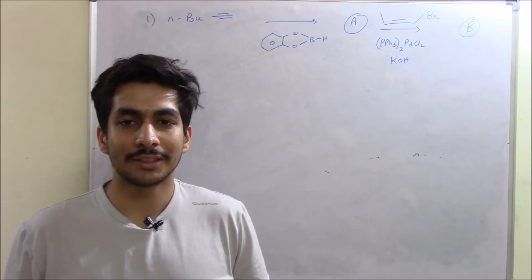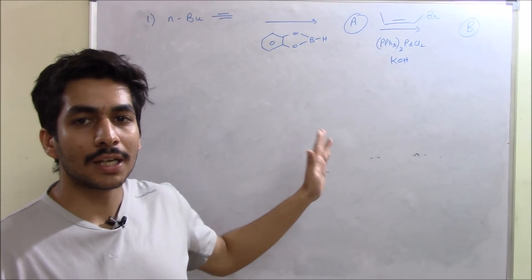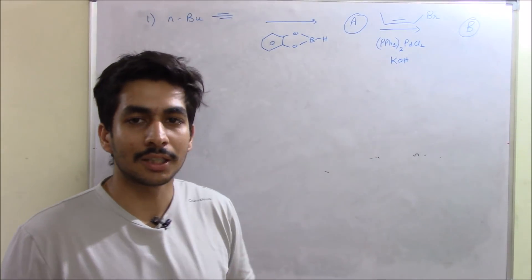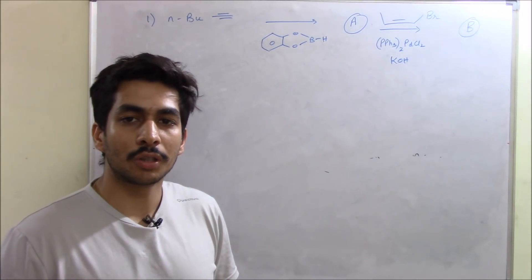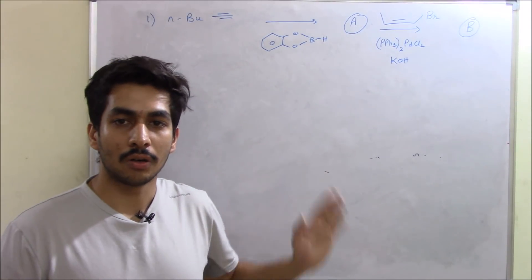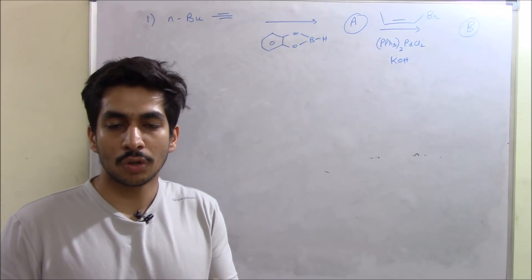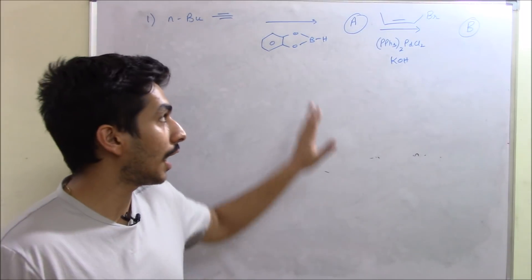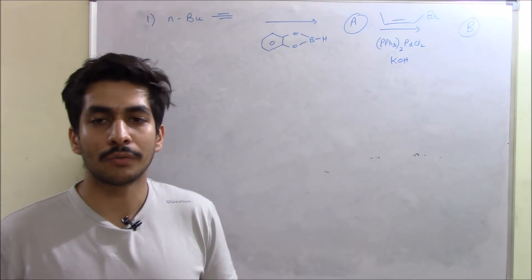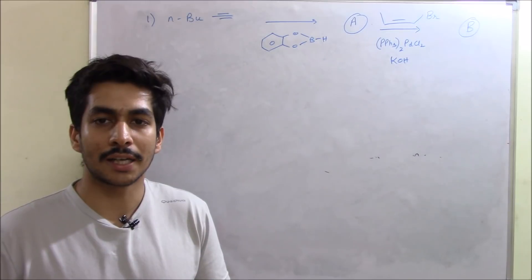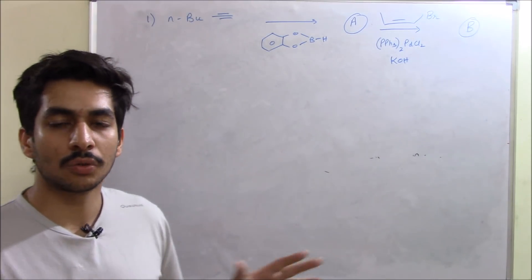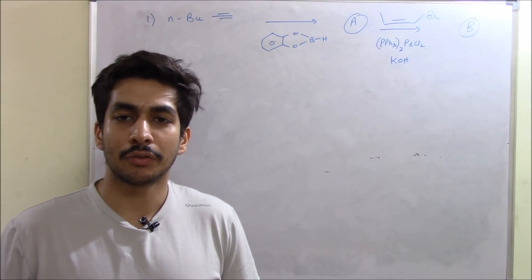The question itself is very simple. The whole reaction from start to product B is nothing but a Suzuki coupling reaction. We can break down the Suzuki reaction into two reactions: first is generation of your alkyl boron compound. You need to have knowledge of the Suzuki reaction and the hydroboration oxidation reaction. These two are very basic reactions in organic chemistry, and if you had knowledge of both, it would have been very easy for you to solve this question.